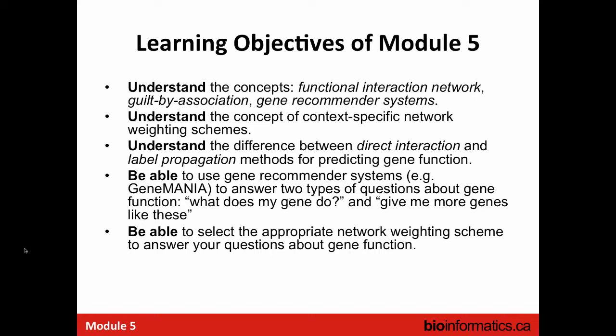Both of those concepts fit into a general model of gene function prediction. I'm going to talk about context-specific network schemes, and concepts involved in taking a network, finding where your genes of interest are, and looking at nearby genes. The two main ideas are direct interaction versus label propagation. The goal is to use gene recommender systems like GeneMANIA to answer: what does my gene do, and give me more genes like these.